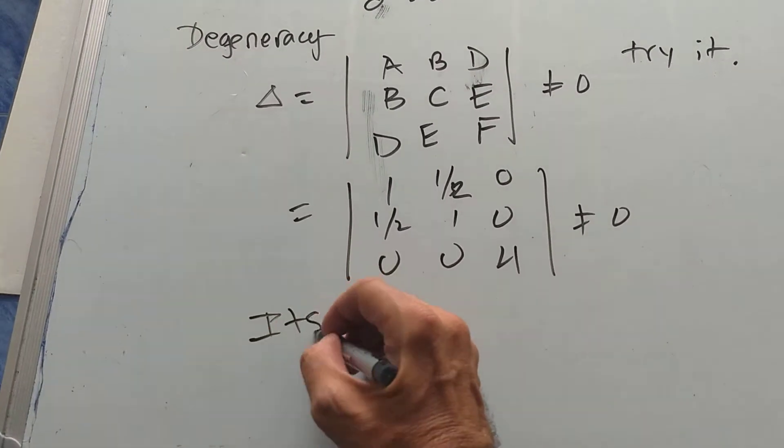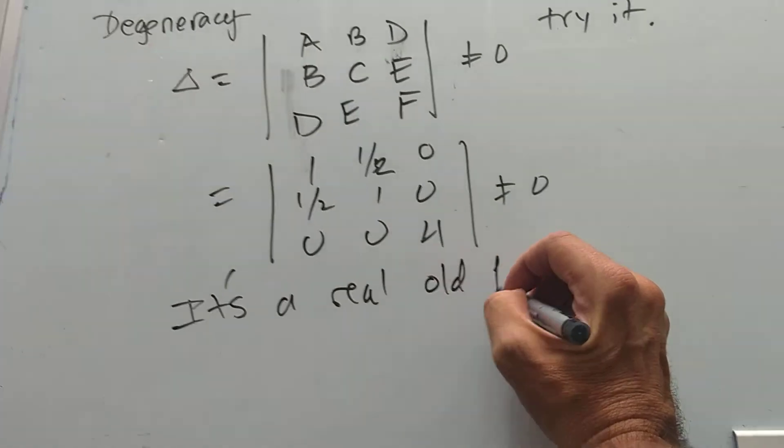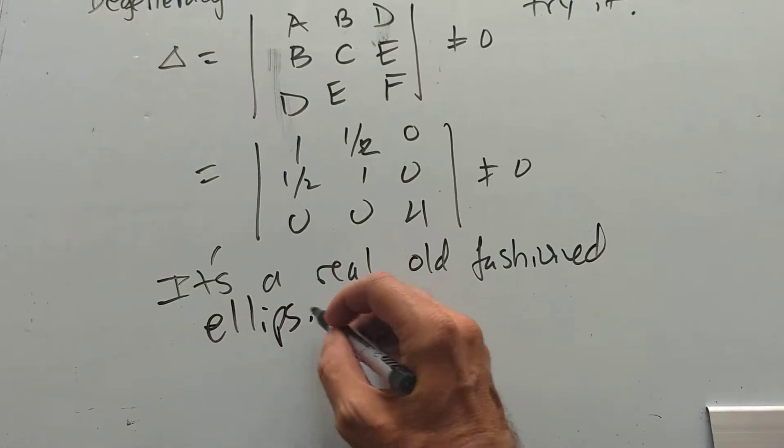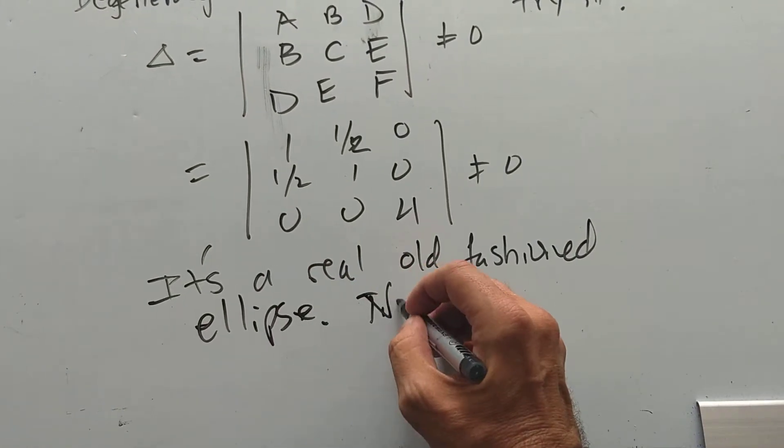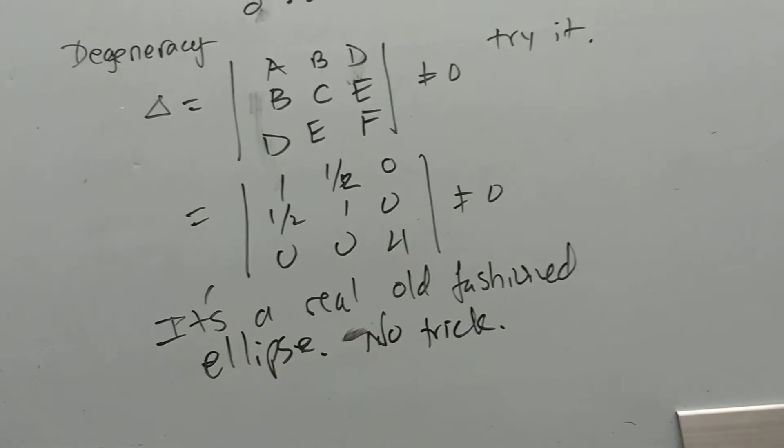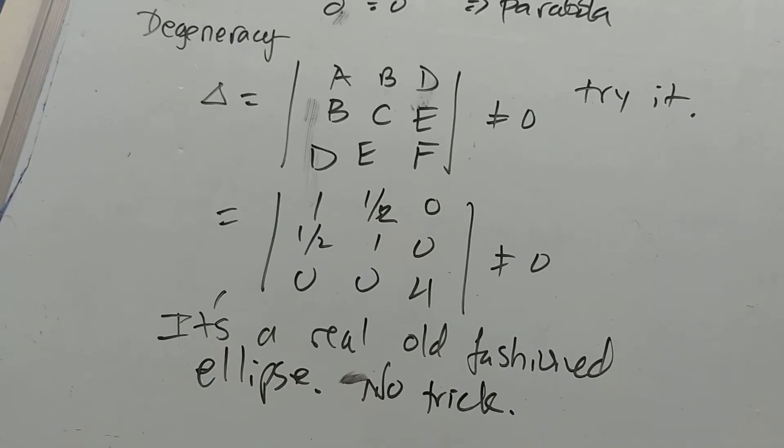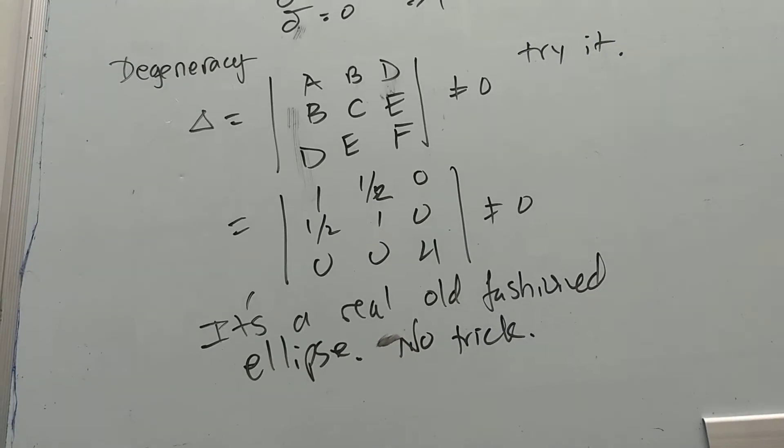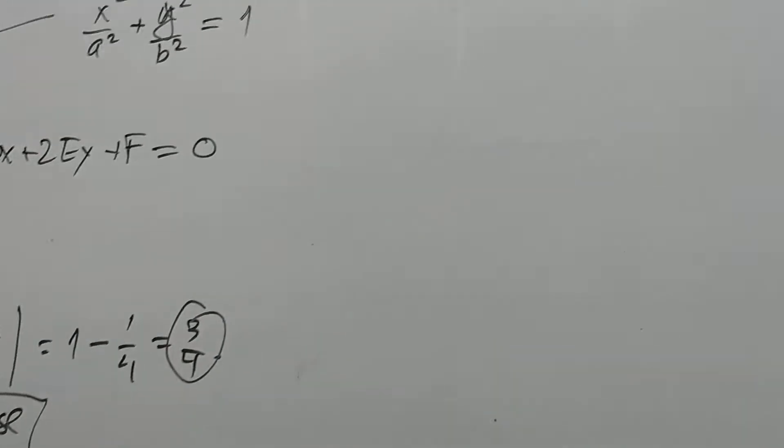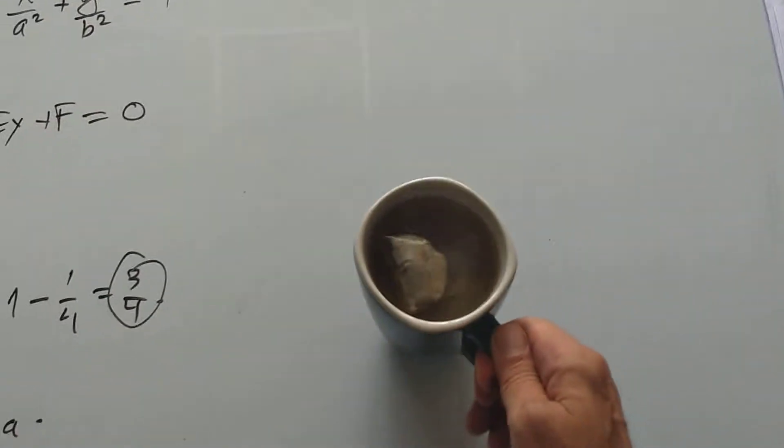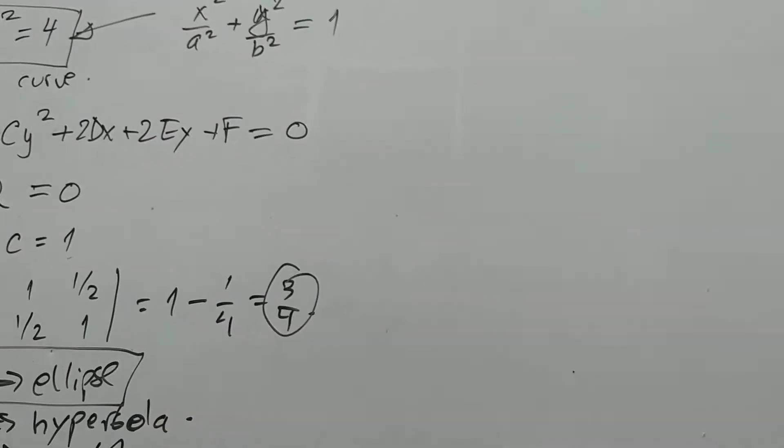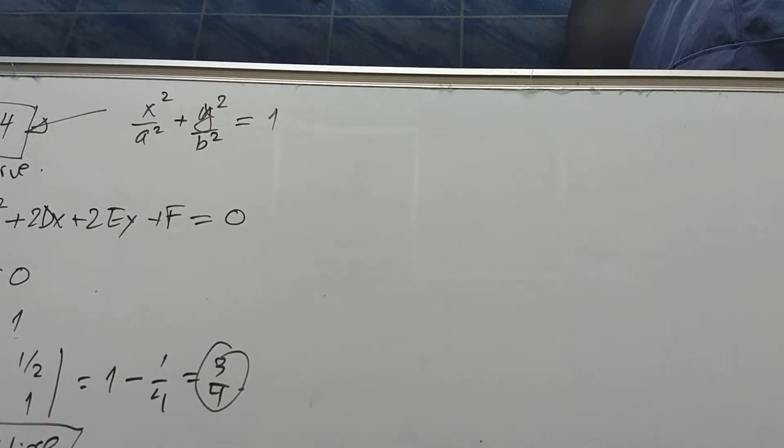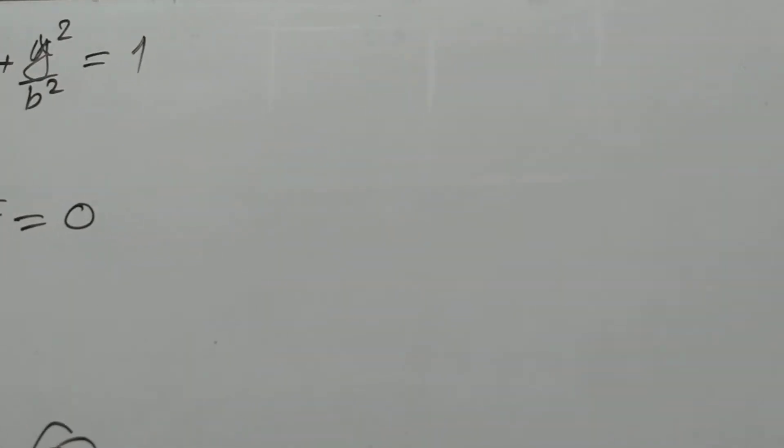It's a real, it's a real old-fashioned ellipse. It's no trick, no trick, no degeneracy. It's not like something that boils down to one line or one point. Not like that at all. Okay. All right, let's continue over here. But first, let's get some of this. Okay. Apricot English breakfast. Yeah, that's pretty good.